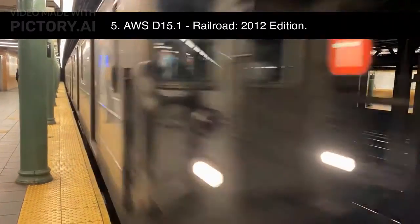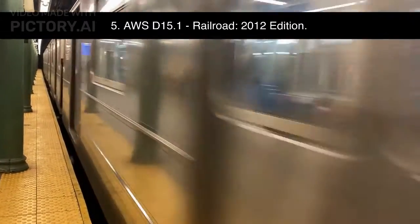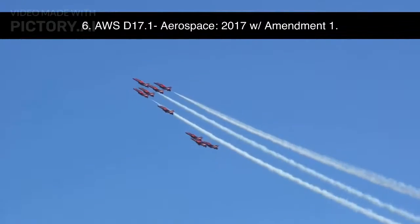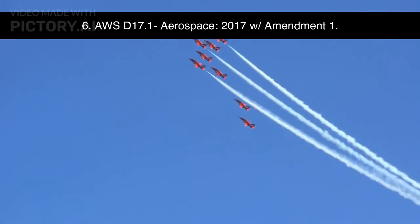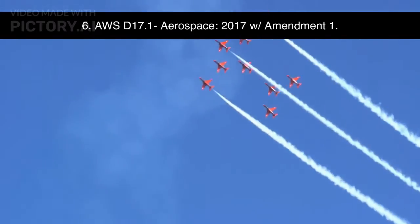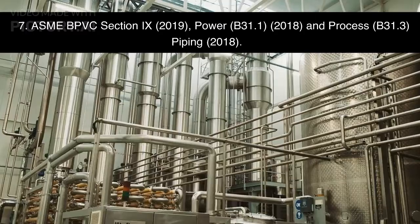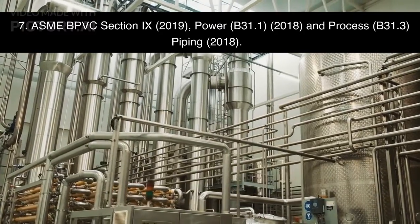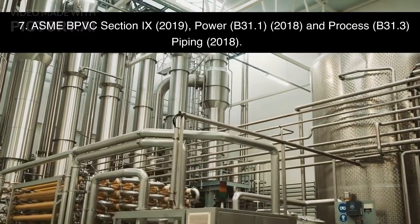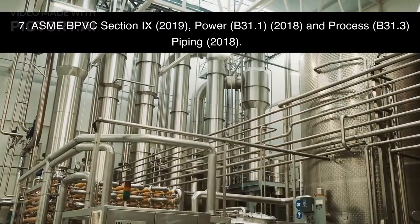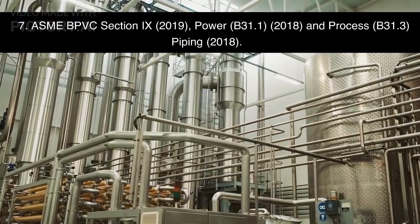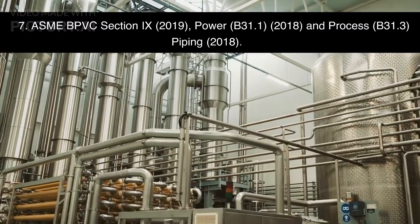Continuing the reference list: 5. AWS D15.1 Railroad, 2012 Edition. 6. AWS D17.1 Aerospace, 2017 with Amendment 1. 7. ASME BPVC Section IX, 2019; Power Piping B31.1, 2018; and Process Piping B31.3, 2018.